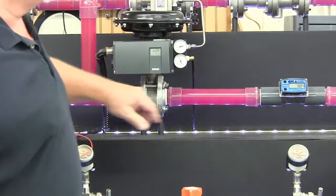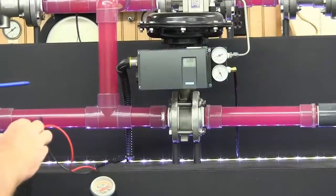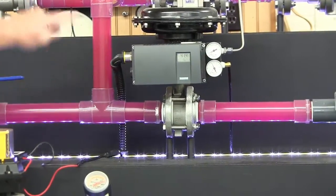If we change the milliamp signal to 14, the valve is now flowing about 10 gallons per minute. Let's close the valve and see what happens. It creates a back pressure.